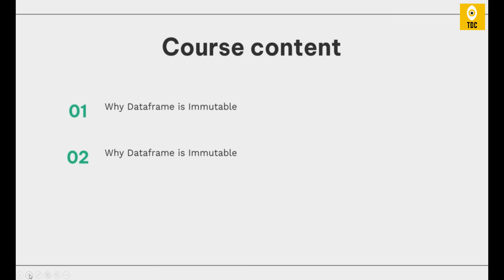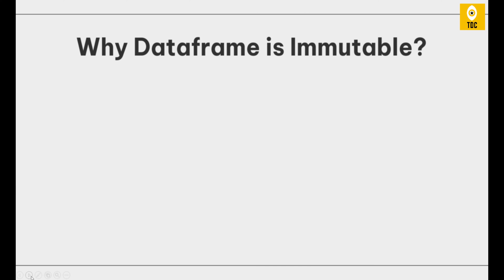The main course content today is explaining why a DataFrame is immutable. Immutable means unchangeable — that is the dictionary meaning. A Spark DataFrame, once created, cannot be changed. You can delete it, but you cannot modify it in place. By nature, a Spark DataFrame is unchangeable.